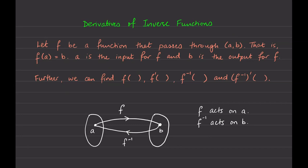Hopefully you've had a chance to think about this. f of would have to be a, because a is the input for f, not b. And similarly, if a is the input for f, it's the input for anything related to it as well. So f prime would be calculated at a as well, not b.